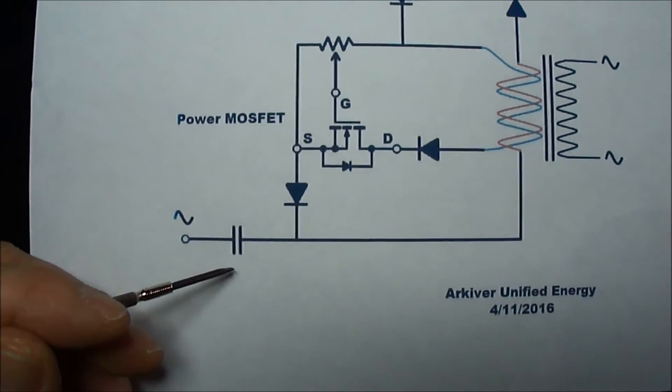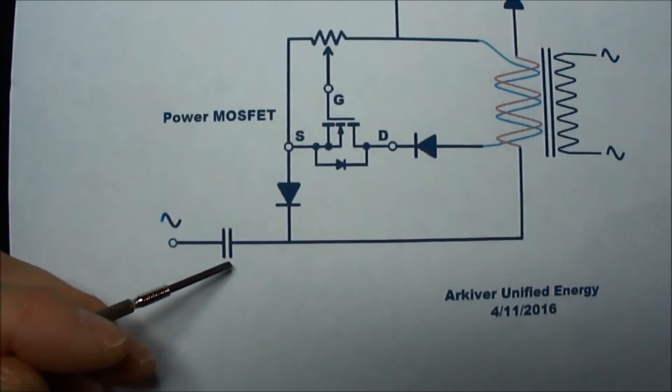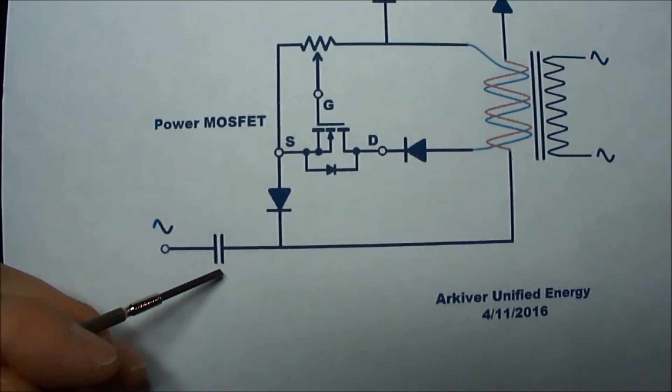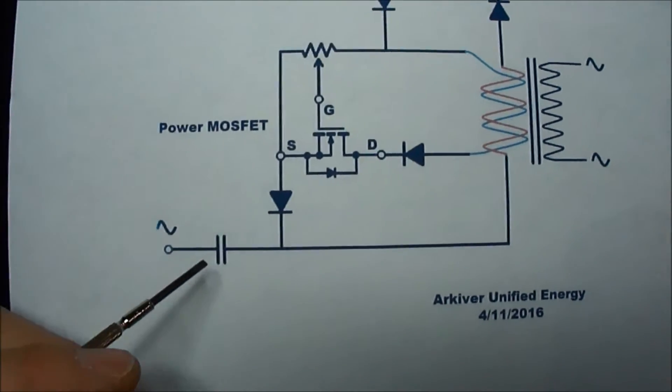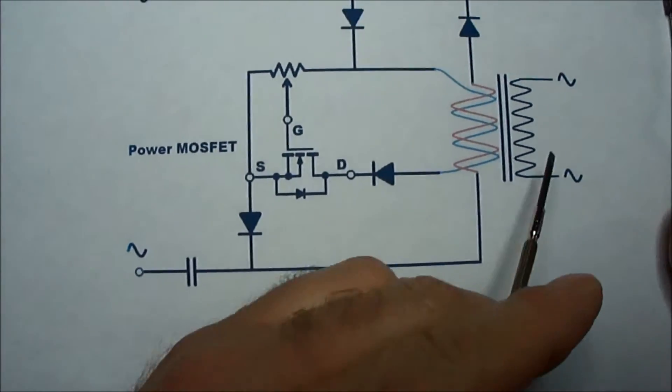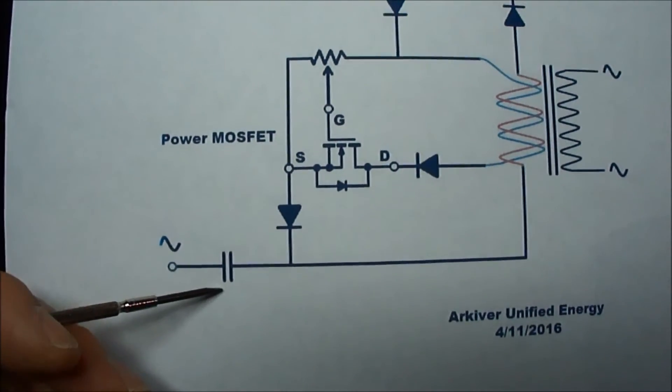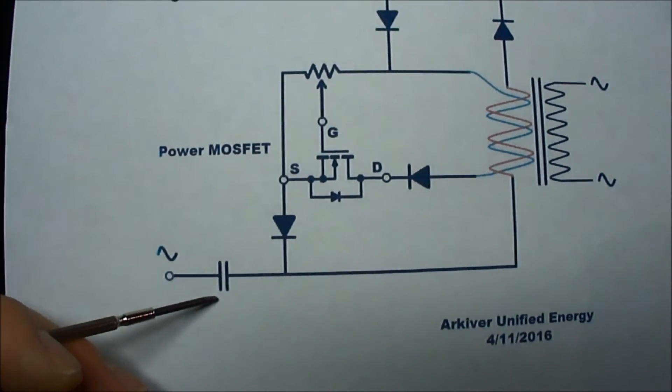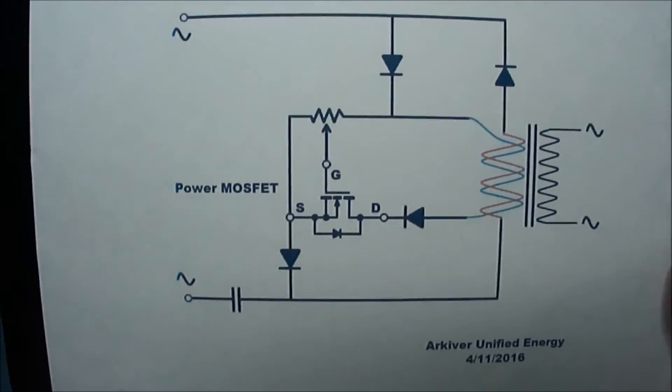This capacitor here can give it a voltage boost, so you can vary the power output. But if your voltage still isn't high enough or low enough, you can change the value of this capacitor. Basically an amplifier.